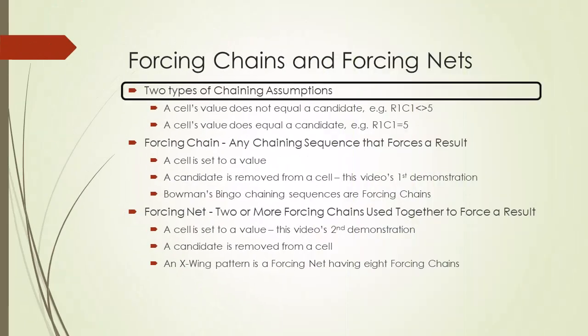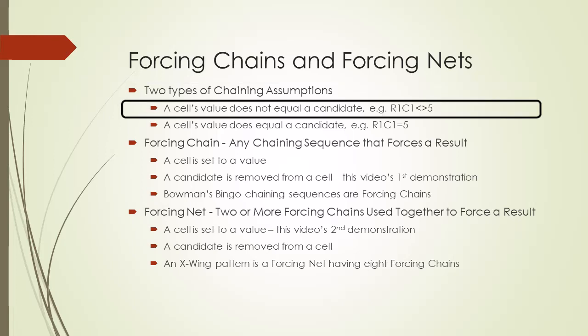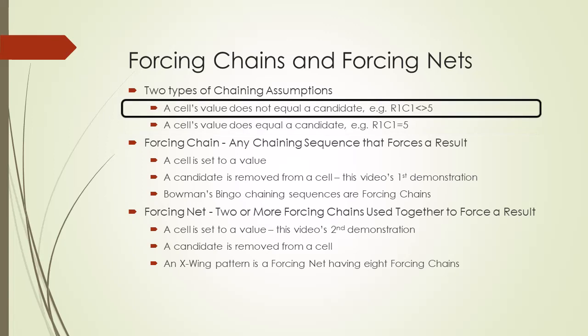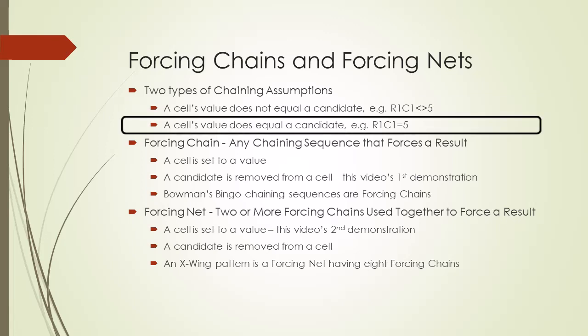There are two types of assumptions we can use when creating chaining sequences. The first type is when we assume a cell is not set to a particular candidate. The second type is when we assume a particular candidate is the value of a cell. All previous videos on chaining used the first type. In this video, both demonstrations will use the second type — assuming a particular candidate is the value of a cell.